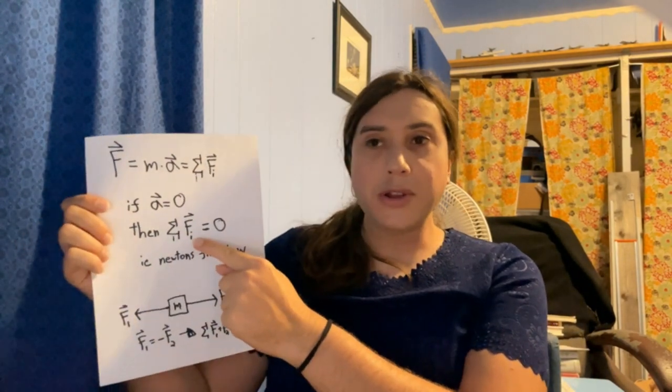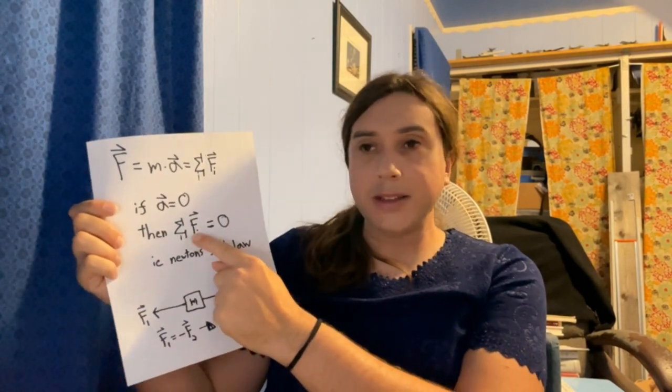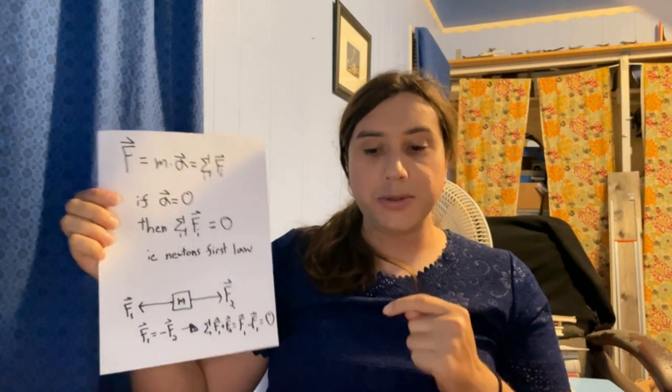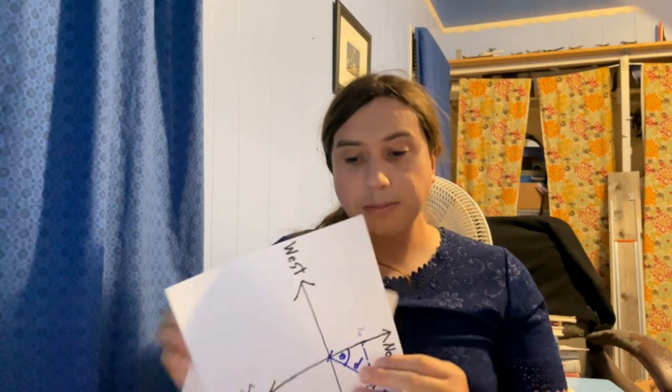Because they're vector quantities, when acting in opposite directions you add that minus sign. That's how we can get that even though there are forces acting, the sum of all forces is still equal to zero. We're going to consider a couple of different situations: one where velocity is constant, and another where position is constant.